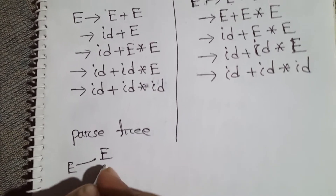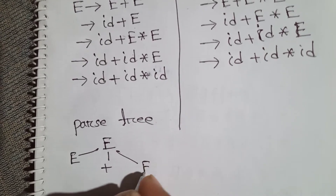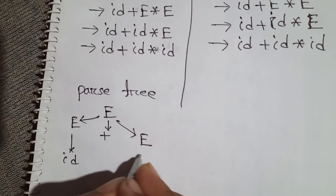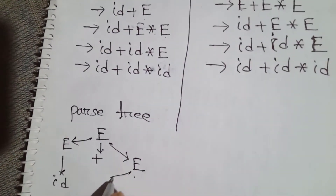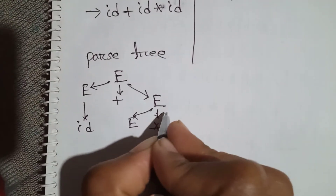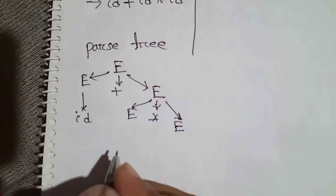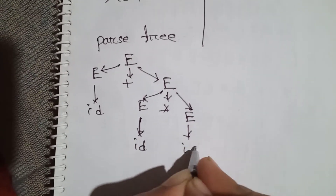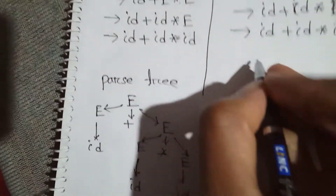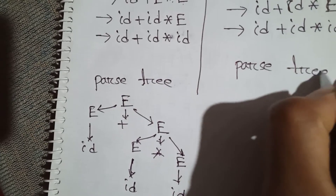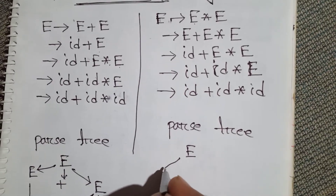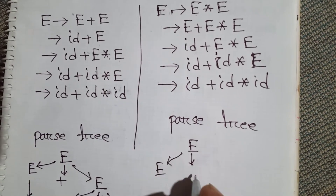For the first parse tree: E → E + E. For the left E we write id. For the right E we write E * E, and for that E * E we write id * id. So the first parse tree applies E + E at the top level, then E * E below.